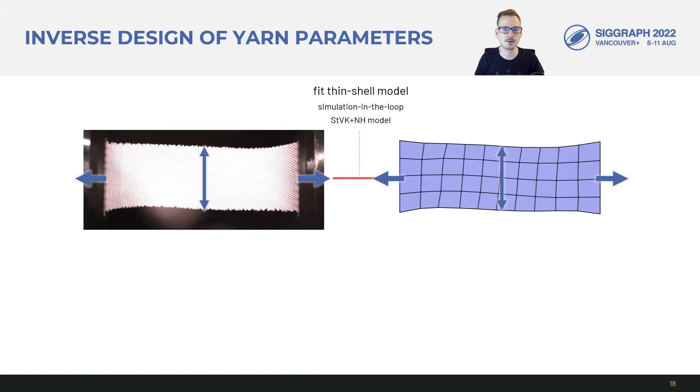The model we fit is a St. Bernard-Kirkhoff model with Neohokian area preservation terms, which we found is a generally decent fit for knits.